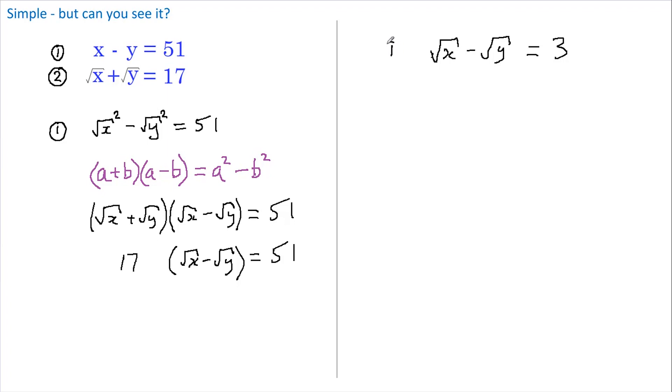And that is our revised first formula. Our second formula is that root x plus root y equals 17. Therefore, if we add these two equations, the root y's will disappear, so root x plus root x is 2 root